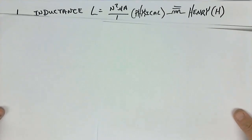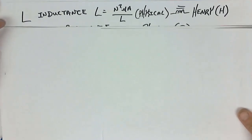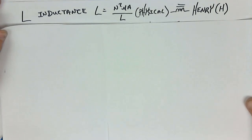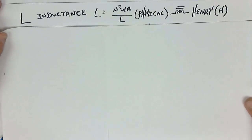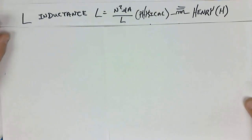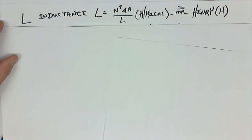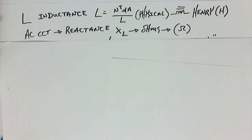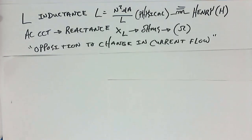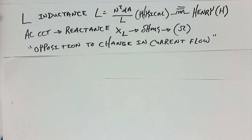Now let's look at the next item in a parallel RLC circuit — one that has to do with coils. Inductance: L inductance is equal to the formula for inductance, measured in Henrys. In addition to that, we have reactance, which is opposition to a change in current flow, measured in ohms in an AC circuit.